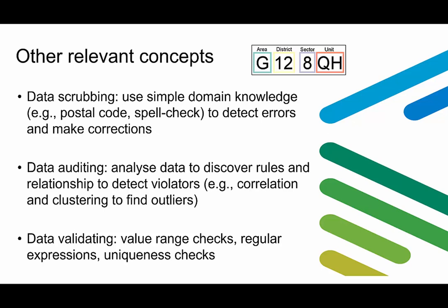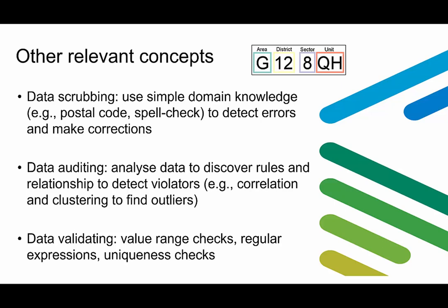Other concepts related to data cleaning include data scrubbing — using simple domain knowledge, for example postcode spell-checking, to detect errors and make corrections — and data auditing, which means analyzing data to discover rules and relationships to detect violators, for example using correlation clustering to find outliers. There is also data validating, which includes value range checks, regular expressions, and uniqueness checks. Unfortunately, manual work is usually essential for cleaning data, as a lot of common sense hasn't been programmed. This explains why data preprocessing can account for almost 80% of the work.